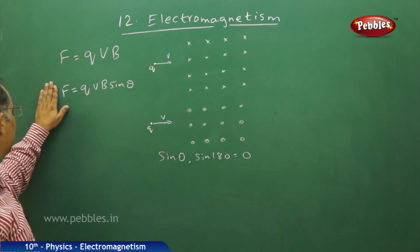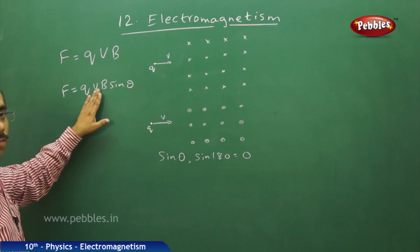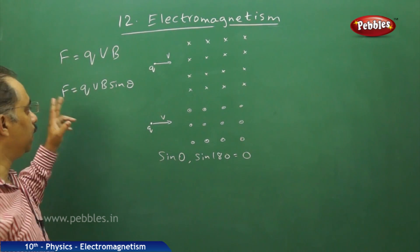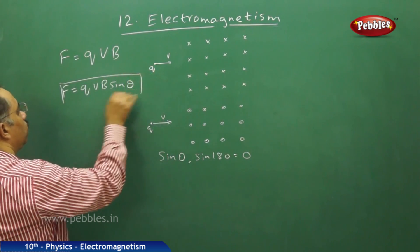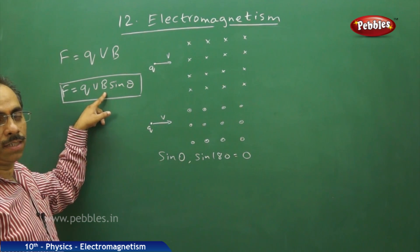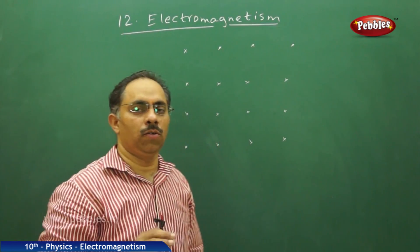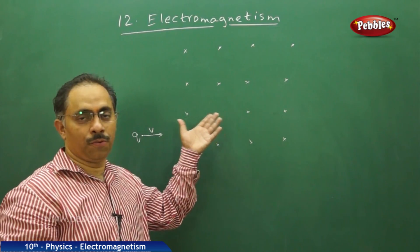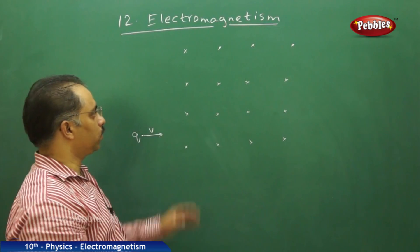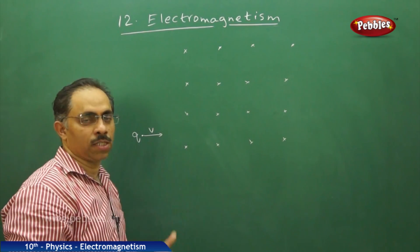So the force on a charged particle moving in a magnetic field is given by F = Q V B sinθ, where θ is the angle between the direction of the velocity and the direction of the magnetic field. Now, knowing the direction of the magnetic force on a charged particle entering a magnetic field, let us see in what direction it moves and how it affects its type of motion.